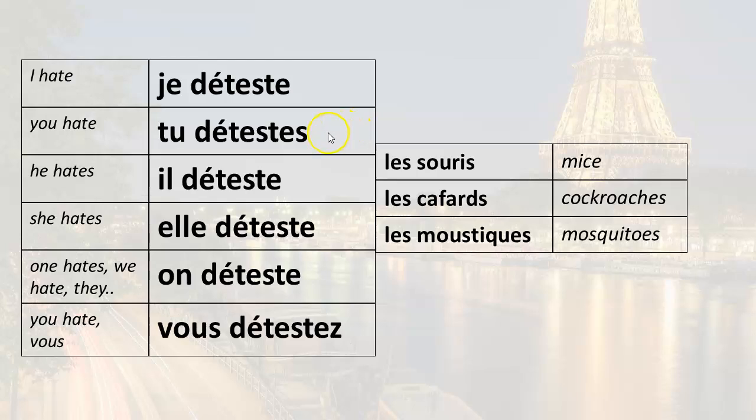You hate — tu détestes. You hate mice — tu détestes les souris. You hate cockroaches — tu détestes les cafards. You hate mosquitoes — tu détestes les moustiques.